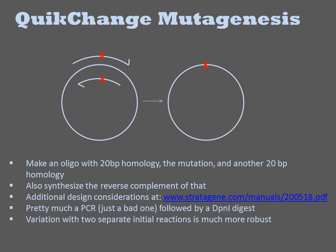These two oligos are used in a PCR containing this template. Though the conditions are identical to PCR, the complementary nature of the oligos leads to it being an inefficient PCR, since the oligos can anneal to one another rather than to the plasmid.